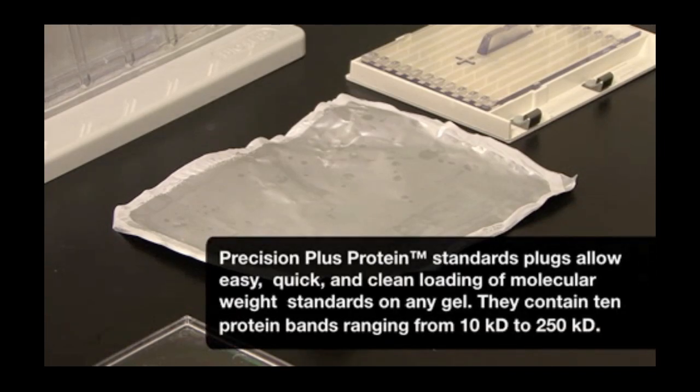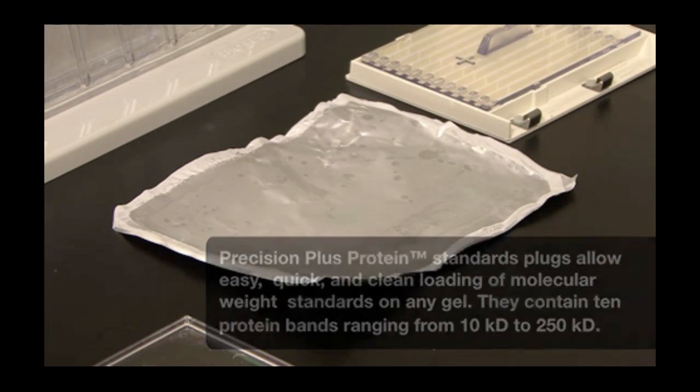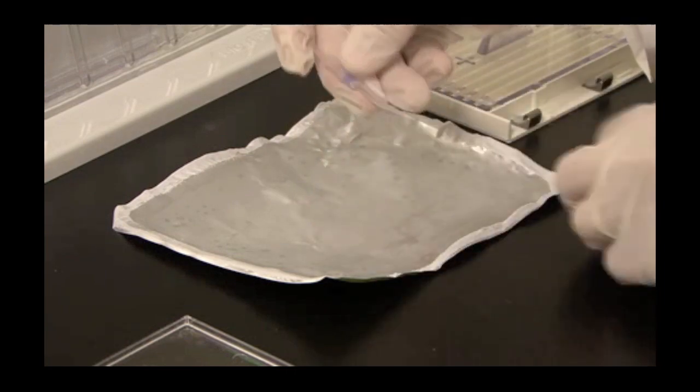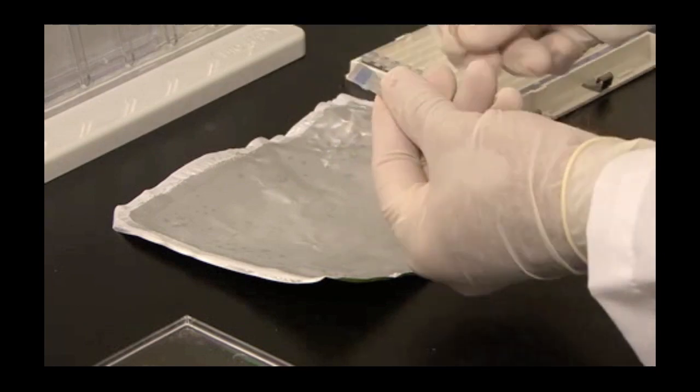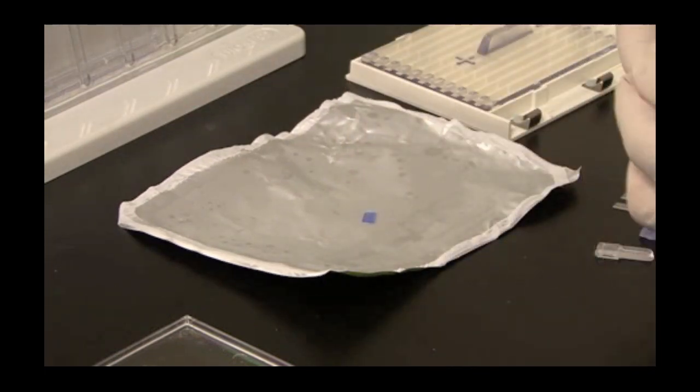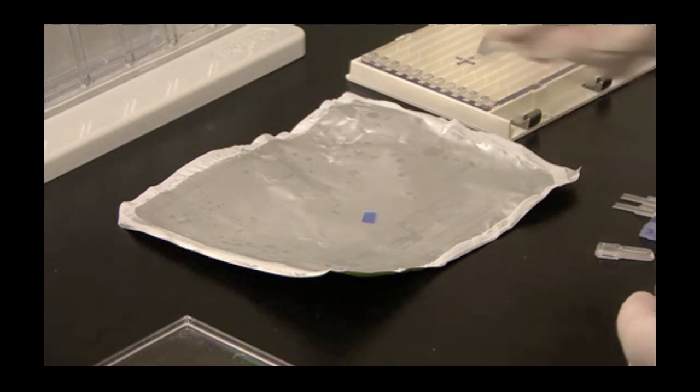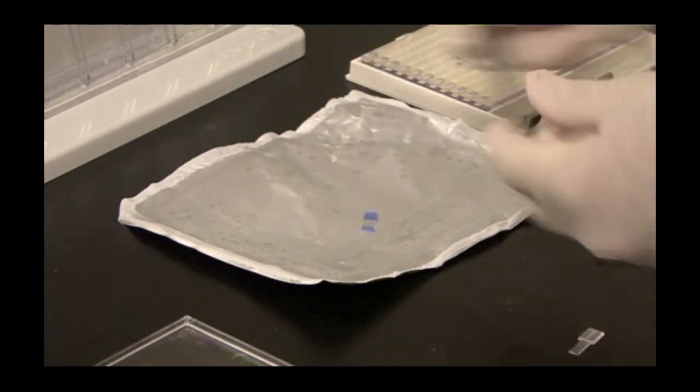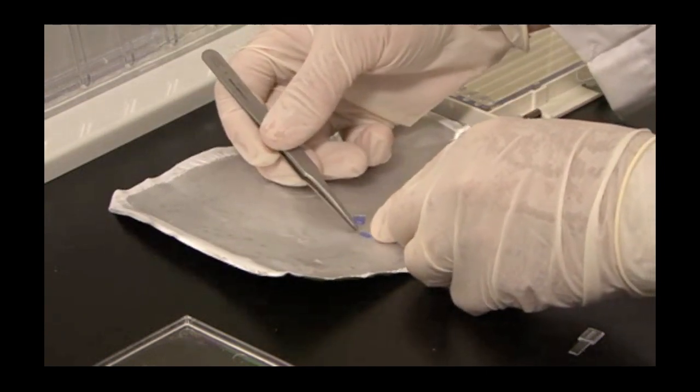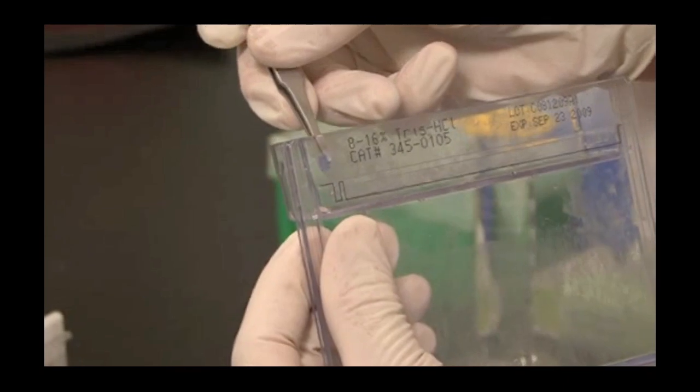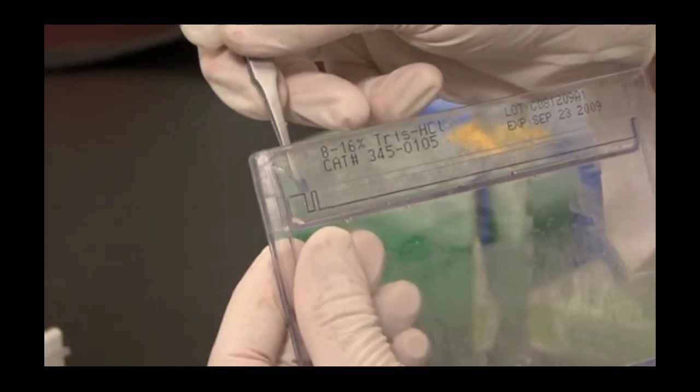Now I will insert a Precision Plus standard plug, which is a broad range standard that has been embedded in Agarose, into the reference well on the right side of the gel. Break off one plug. Hold onto the handle and break off the spatula. Using the spatula, push out the Agarose plug. For Criterion gels, I usually cut the plug into four slices to match the size of the well. In this case, I need one. With forceps, take one of the slices, place on the back of the gel cassette over the reference well, and gently push the plug into the reference well.